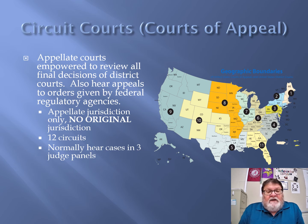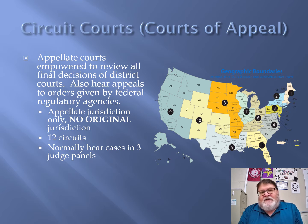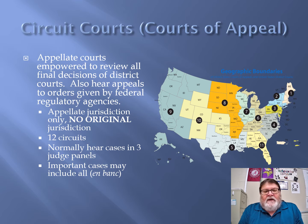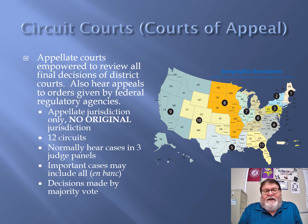When a case is appealed to the circuit court, it is normally heard in three-judge panels. Attorneys for each side argue in front of three judges, and the decision is by majority. There are times, if a case is really important, when all the judges in that circuit hear the case — that's called en banc. The vast majority of cases use three-judge panels, and the outcome is either two-to-one or three-to-nothing.